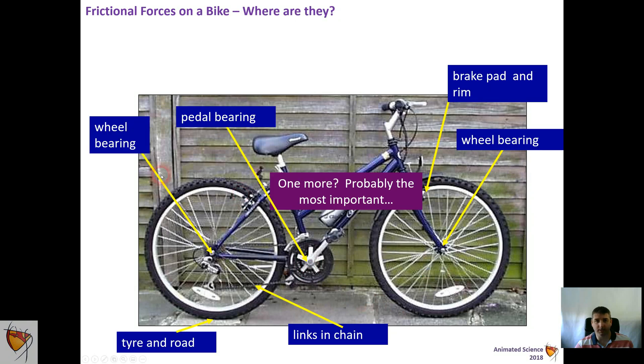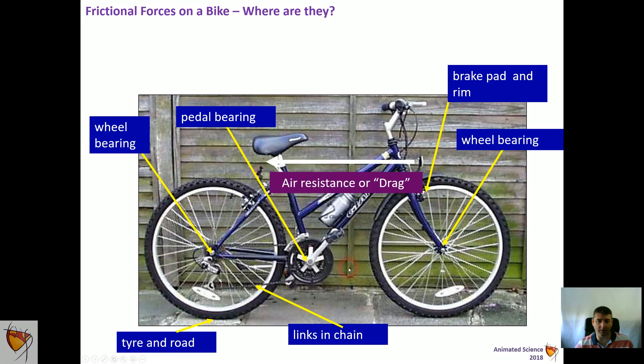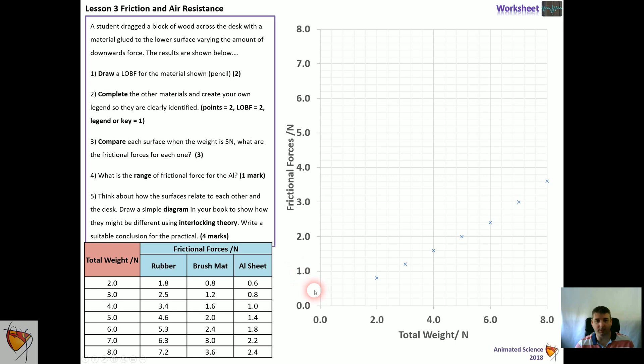We could also think about friction forces on a bike, so there are different places where friction actually occurs, and also, of course, there's air resistance and drag that act against you when you start to move.